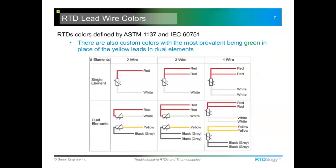Outside the probe, these lead wires have a specific color code that helps identify a couple of things: most obviously whether it's a 2-, 3-, or 4-wire circuit. The color codes can also help identify the temperature coefficient, defined by either the ASTM or IEC standards for RTDs. They define a temperature coefficient of 0.00385. If you have a sensor with two red leads and one white, that's a good indication it is a 0.00385 temperature coefficient sensor.